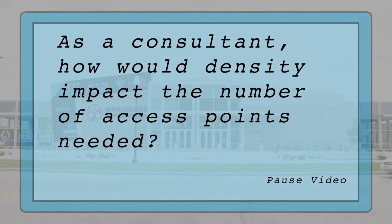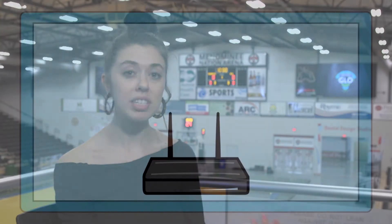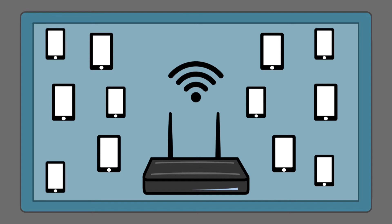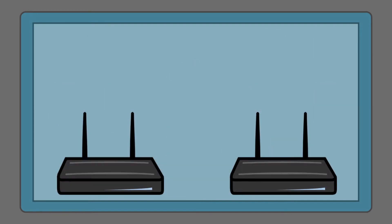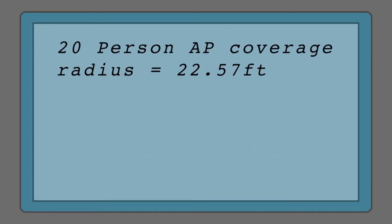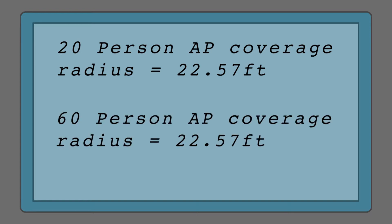As a consultant, how would density impact the number of access points needed? All access points cover the same area. The difference is how many people can connect to each access point based on the strength of the antenna. For our purposes, your company sells two different types of access points: one that can service 20 people and one that can service 60 people. The 20-person AP has a coverage radius of 22.57 feet, and the 60-person AP also has a coverage radius of 22.57 feet.